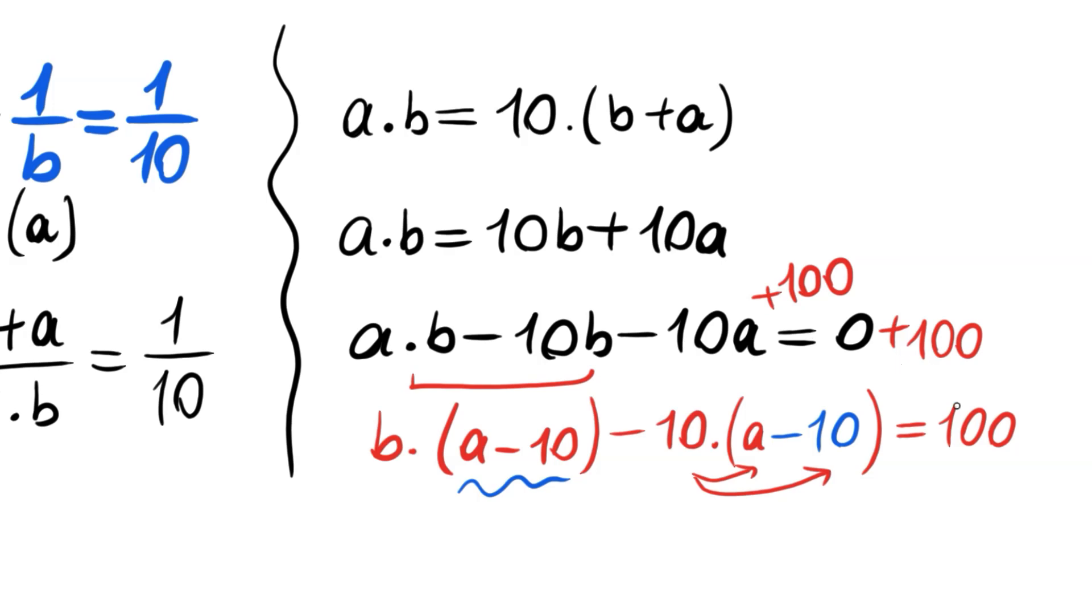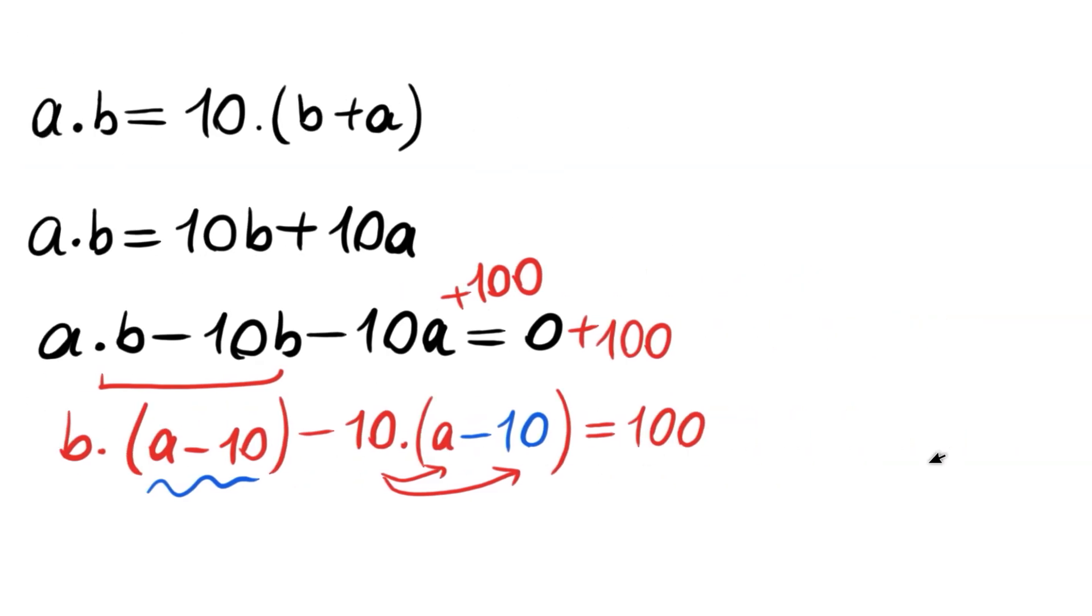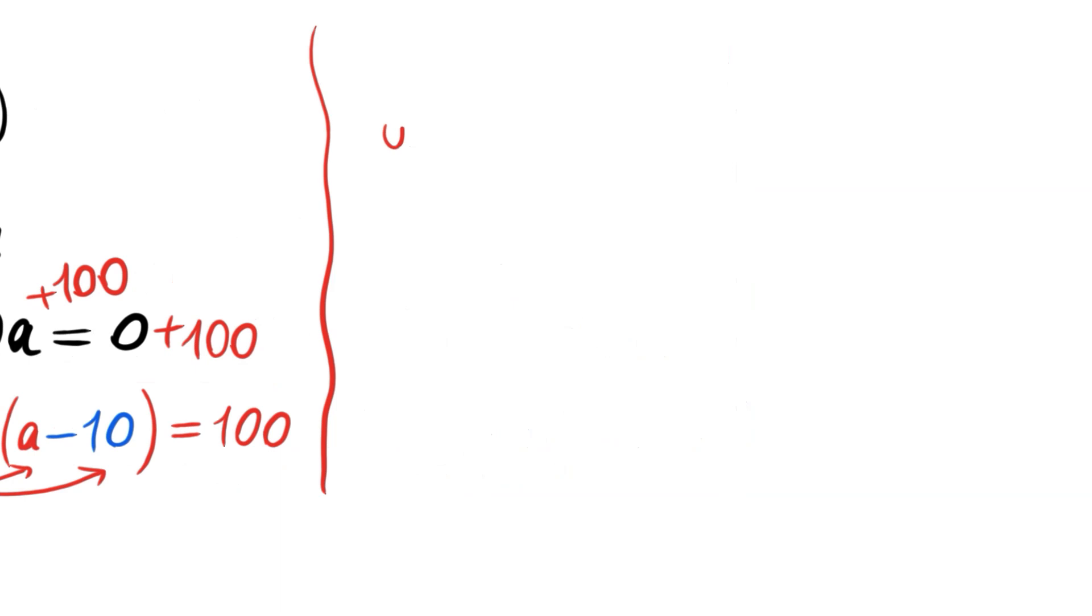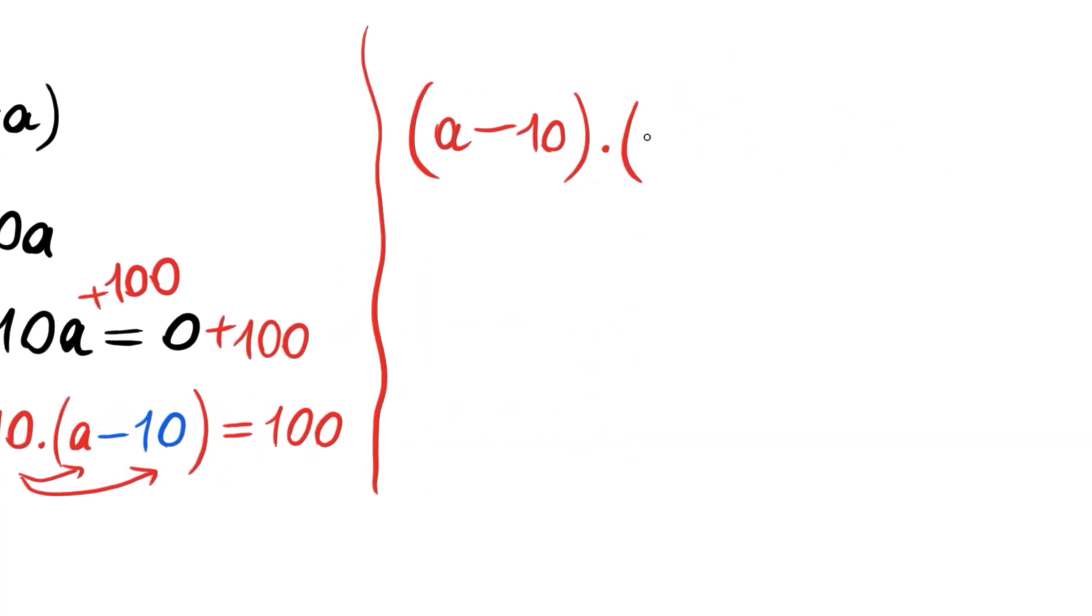Now we have a common factor on the left-hand side, which is a minus 10. And if we factor a minus 10 out, we will have b and minus 10. This is equal to 100.